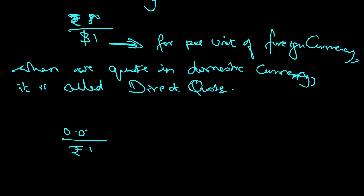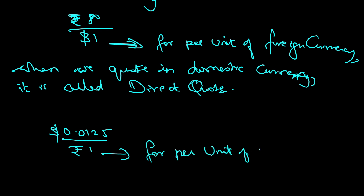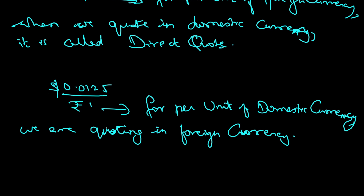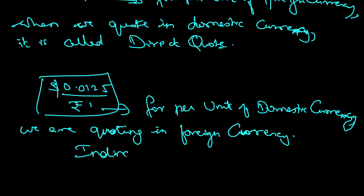When I say one rupee is 0.0125 dollar, this is called an indirect quote. That means for per unit of domestic currency, we are quoting in foreign currency. So if I quote like this, it is not wrong, but it is an indirect quote.